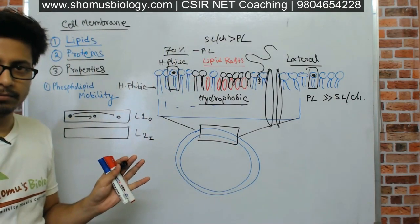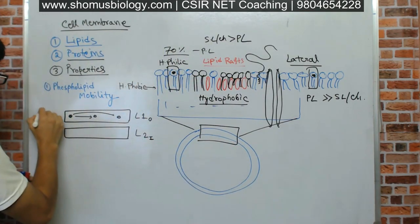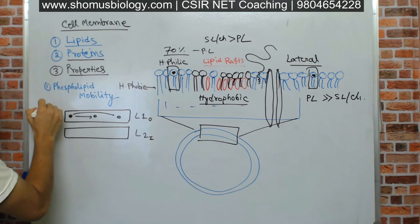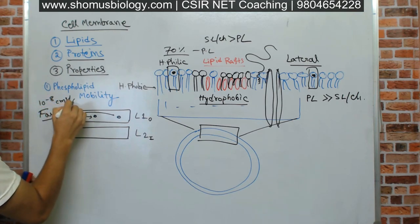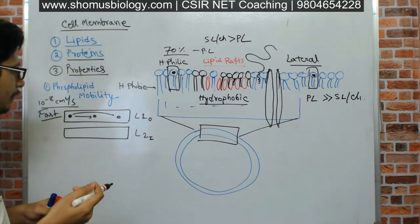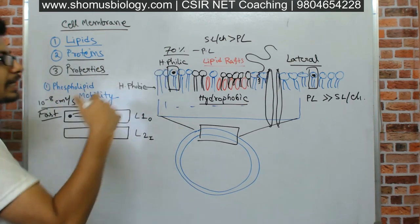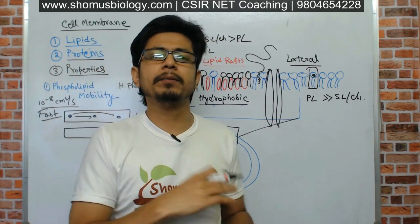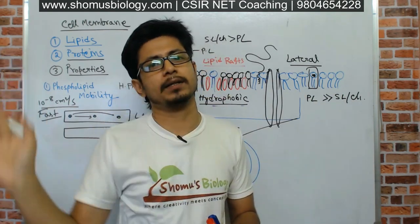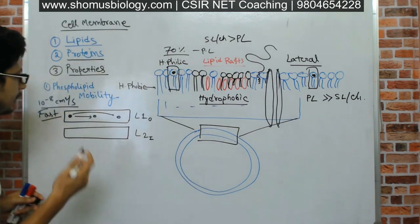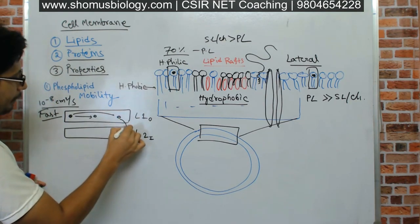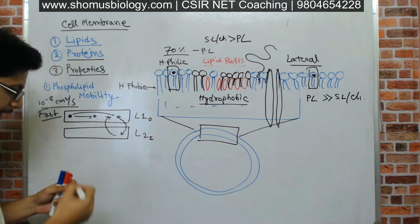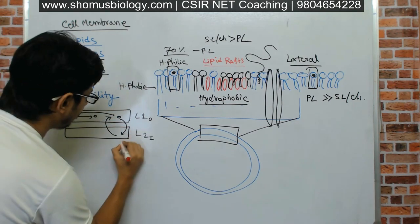This lateral movement is very fast — on the order of 10 to the power of minus 8 centimeter squared per second. In fact, a phospholipid can move many times across the membrane surface in just one minute. However, imagine the situation where a phospholipid needs to move from one leaflet to the other — either from the outer leaflet to the inner leaflet or vice versa. This kind of movement is known as flip-flop movement.